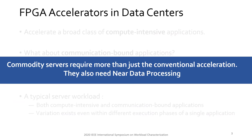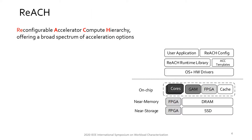A commodity server requires more than just conventional acceleration — they also require near-data processing. In this work, we present REACH: a Reconfigurable Accelerator Compute Hierarchy that combines on-chip, near-memory, and near-storage accelerators, and offers a broad spectrum of acceleration options.